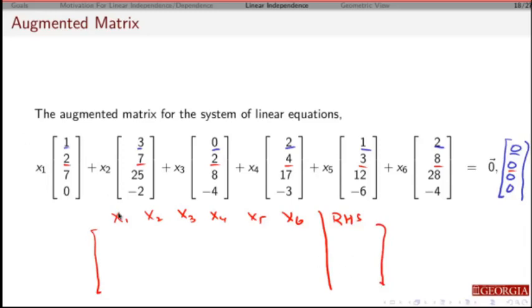So what do I get? So my coefficients for X1 are going to be 1, 2, 7, 0. Coefficients for X2 are going to be 3, 7, 25, minus 2. Coefficients for X3 are going to be 0, 2, 8, minus 4. For X4, it's going to be 2, 4, 17, minus 3. X5 is 1, 3, 12, minus 6. X6 is 2, 8, 28, minus 4. And the right-hand side are going to be all zeros. Now, there's my augmented matrix.